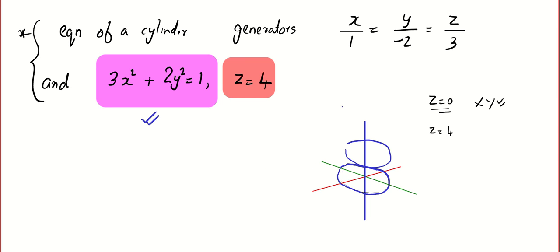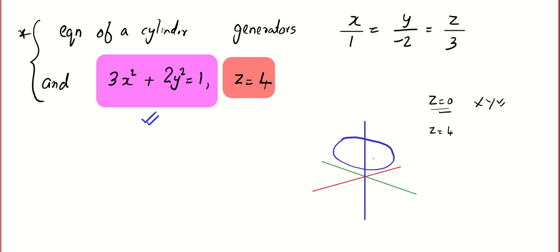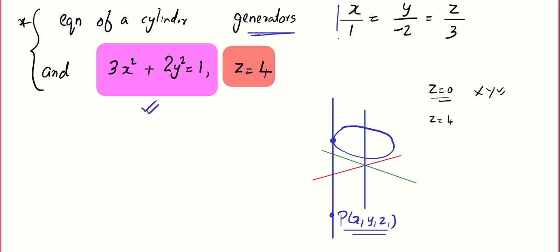Now look at the procedure. We make a rough picture: we have the standard ellipse, just imagine it went four units up, and we have a generator — this is the generating line. So let x1, y1, z1 be a point on the generator. Our generators are parallel to the given line, which means the direction ratios of our generators will be 1, −2, 3.